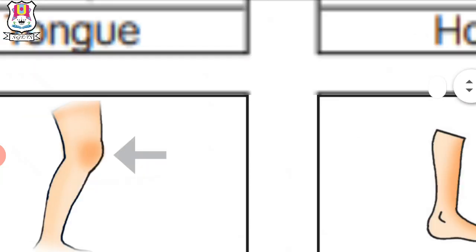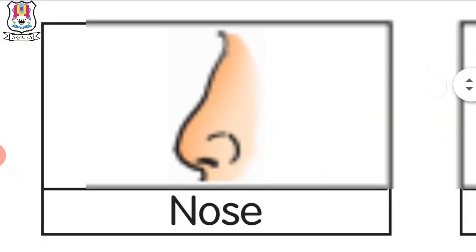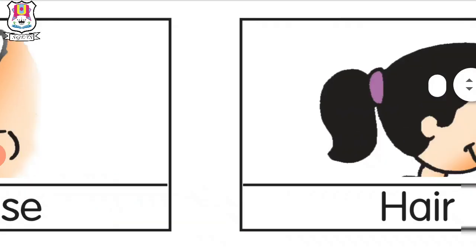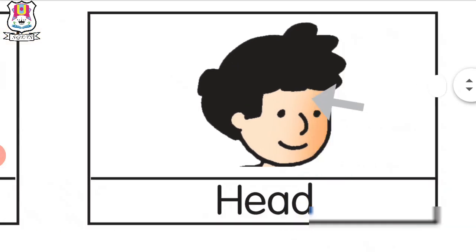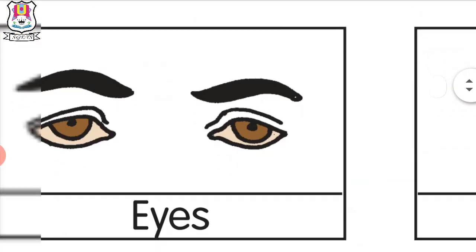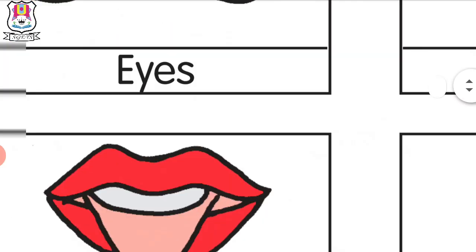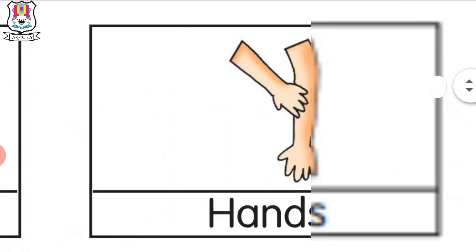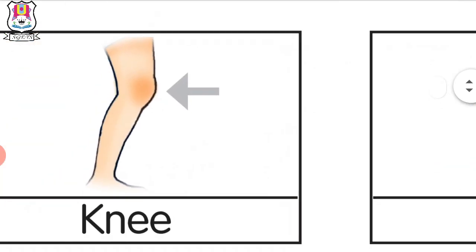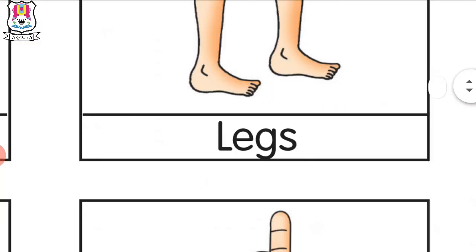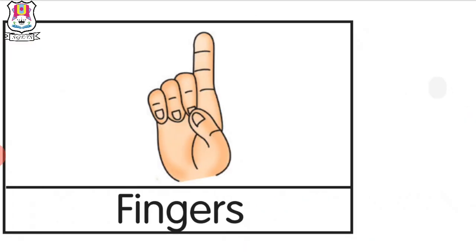Okay, now we can repeat it. What is this? Nose. Hair. Ears. Head. Eyes. Lips. Tongue. Hands. Knee. Legs. Foot. Fingers.